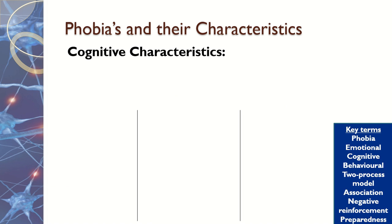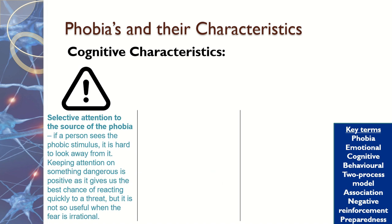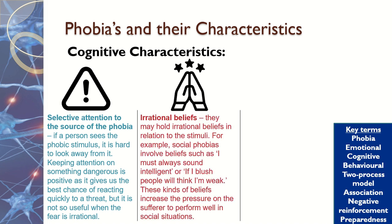There are also cognitive characteristics — our thought processes. The first is selective attention to the source of the phobia, where we focus solely on it. If there's a spider or a dog in the room, your whole attention is on that thing and nothing else registers — not the conversation, not other people moving around — because you're solely focused on the source of your phobia. The second is irrational beliefs, such as believing a spider can hurt you or that you'll accidentally swallow one in your sleep — these beliefs are very irrational even if you intellectually know them not to be true.